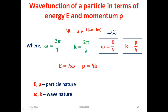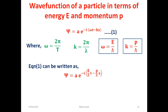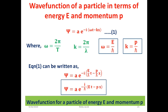We now have two transformation equations connecting wave and particle nature: omega = E/ħ (LHS is wave nature, RHS is particle nature) and k = p/ħ (same structure). Substituting into the wave displacement equation, the wave function becomes psi = A exp(−i(E/ħ)t − (p/ħ)x). Taking ħ as common, we get psi = A exp(−i/ħ · (Et − px)). This is the desired wave function of a particle expressed in terms of its particle nature — energy E and momentum p.